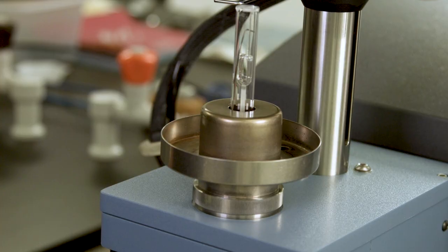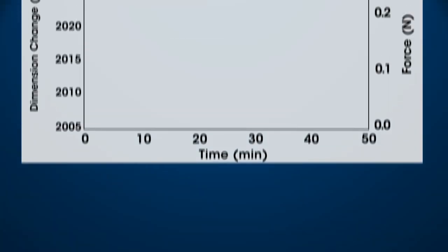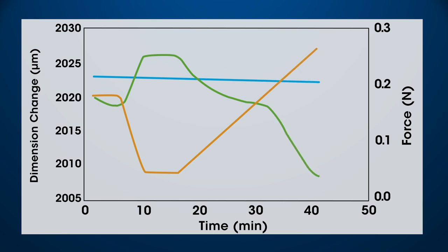The TMA Film Fiber Setup allows measurement of physical properties of fibers and films as a function of force, temperature, or time.